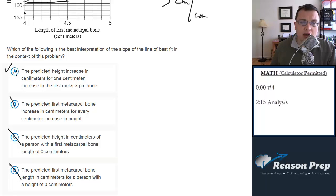So the only choices really here are A and B, and you'll go with A because that shows the right order, that it's height over metacarpal bone. It's height per change in metacarpal bone.